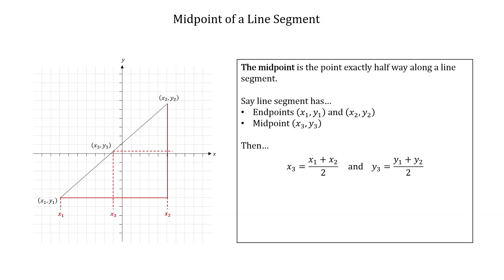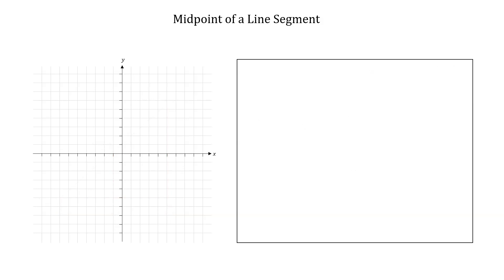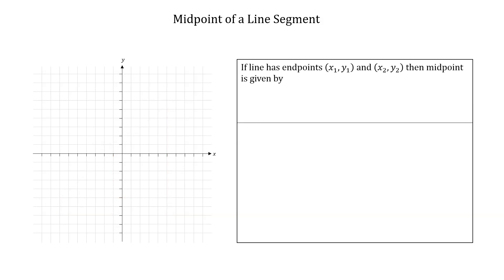Similarly, y3 equals y1 plus y2 divided by two. The key result is: to find the midpoint of a line segment given its endpoints, take the average of the x coordinates and the average of the y coordinates. So the midpoint is given by (x1 + x2)/2, (y1 + y2)/2.